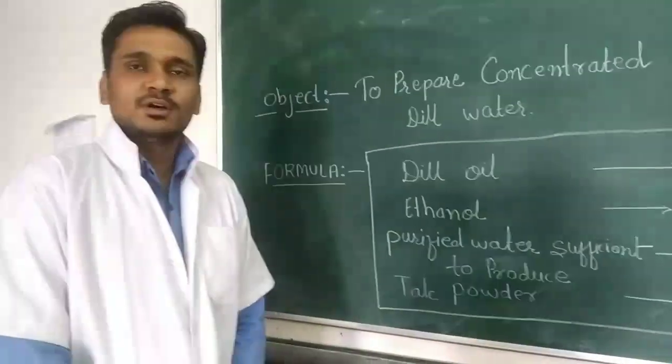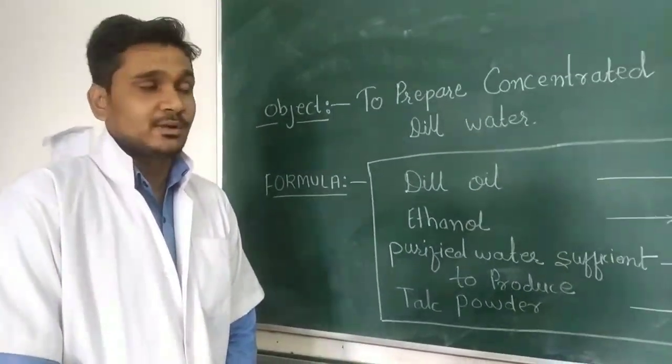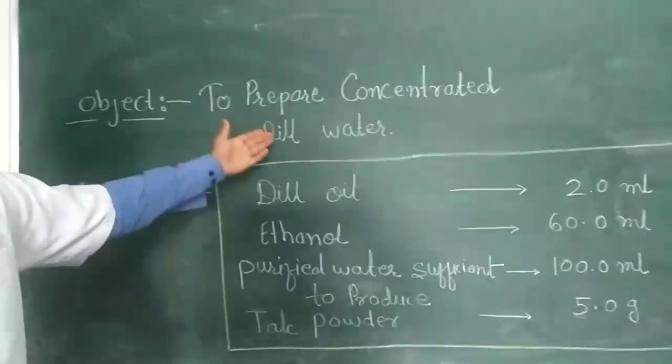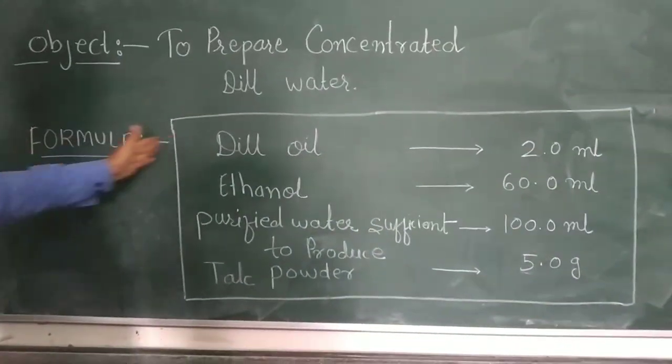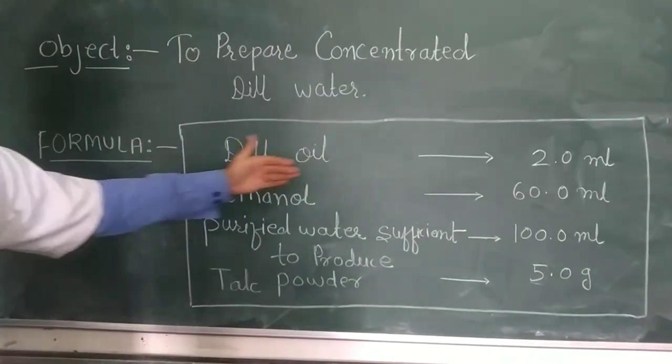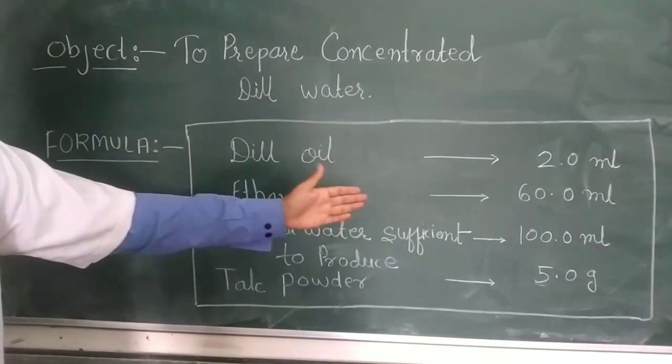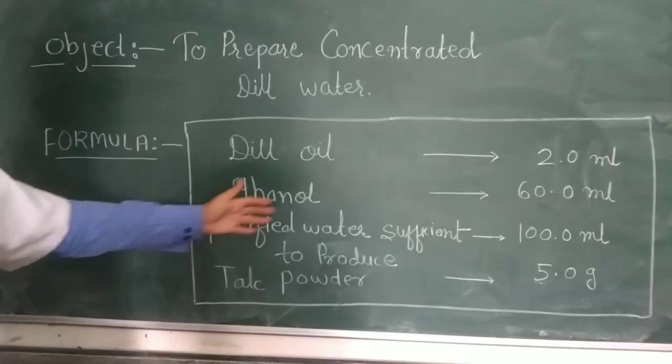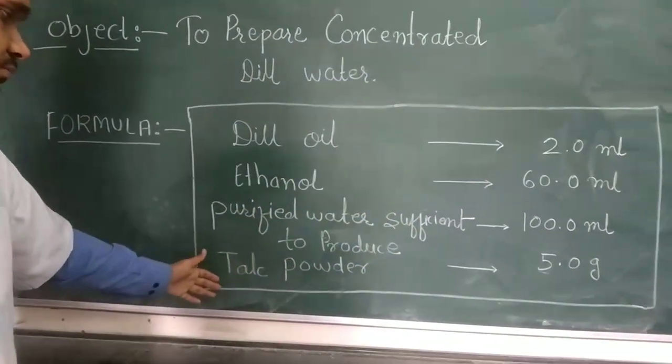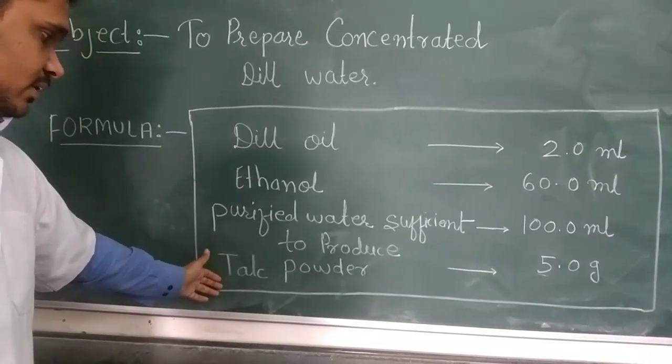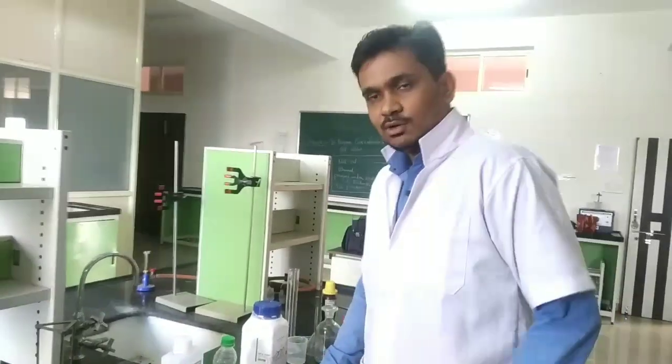Welcome all. Today we are doing our next practical of diploma pharmacy, and our objective is to prepare concentrated dill water. The formula is: dill oil 2ml, ethanol 60ml, purified water sufficient to produce 100ml, and talc powder 5g. Now let's see the requirements.